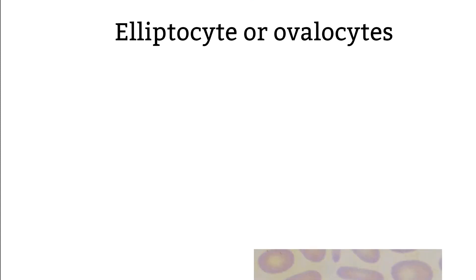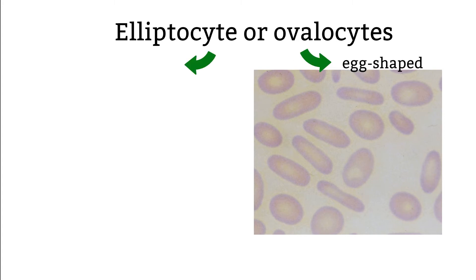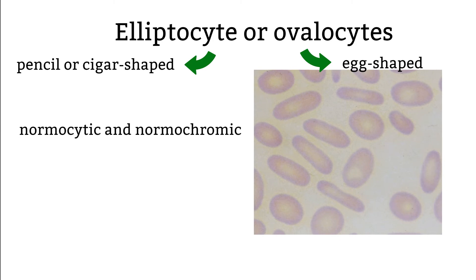Elliptocytes or ovalocytes. Elliptocytes and ovalocytes are sometimes used interchangeably, though some textbooks do distinguish between them. Ovalocytes are more egg-shaped and elliptocytes are more pencil-shaped. The size is usually normocytic and normochromic. Here are some diseases that they can be associated with.